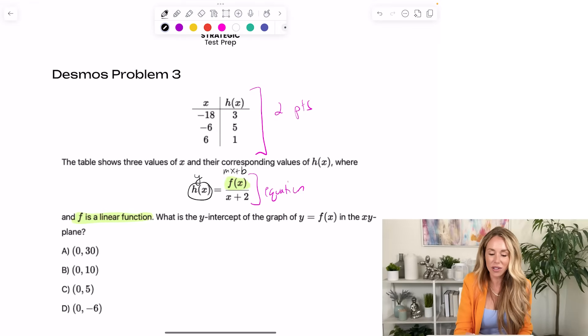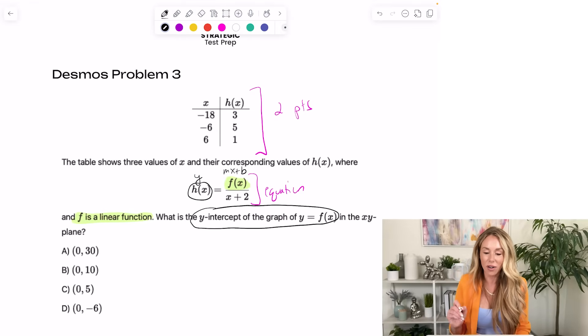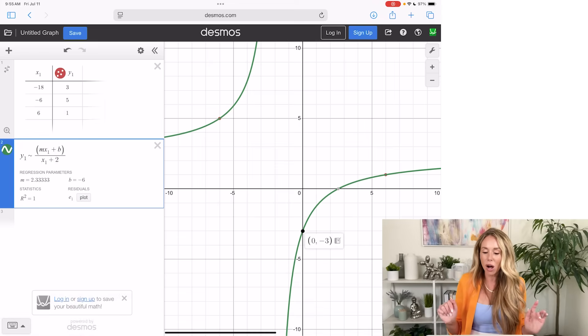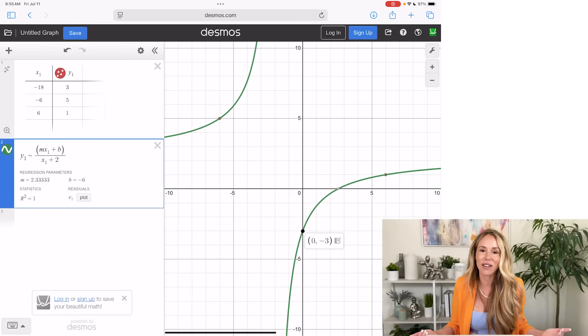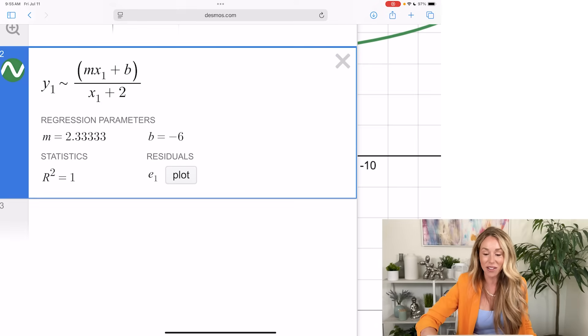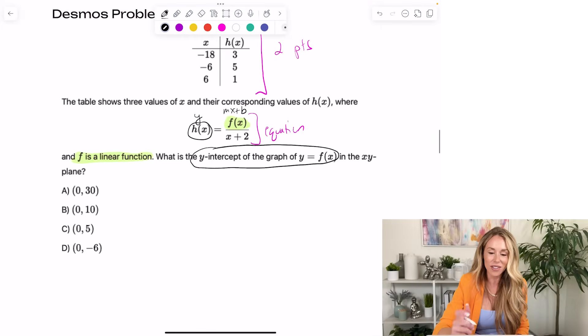Now the question, you always want to go back to the question. The question is asking, what is the y-intercept of f of x? Okay, f of x is just the top part of the equation. It's just the line. So when you look at this picture, we don't see a line graph. This is the picture of h of x. So you do not want to go here and go, oh, the y-intercept is at negative 3, because that's not the right y-intercept. They're not asking for h of x. They want it for f of x. So if you look over here, we have these regression parameters. And essentially, the b is the y-intercept for the mx plus b part. So the answer is going to be negative 6. And let's just see where that is. Perfect. That's d.